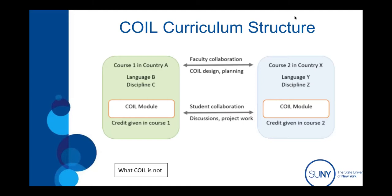COIL is also not a way for us to recruit online students. Your students sign up for your course here, they pay tuition here, and they get their grades from here. Your partner's students sign up for the course there — they're not signing up for your course. Your partner gives grades to their students in their course. That's in a nutshell what we're talking about with COIL courses.